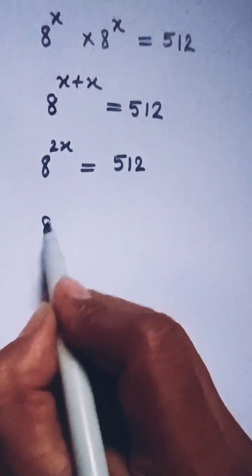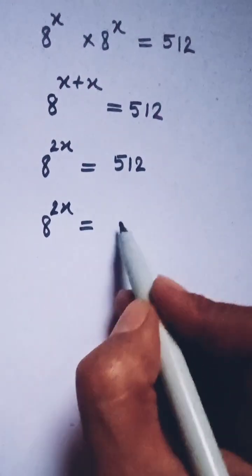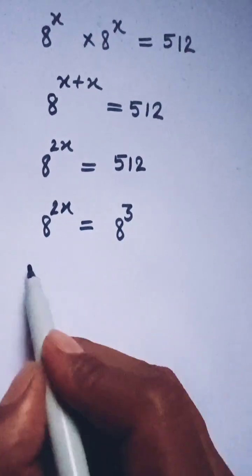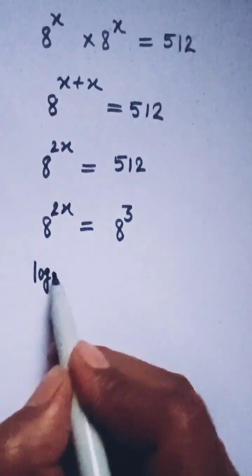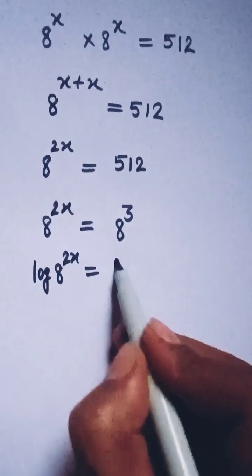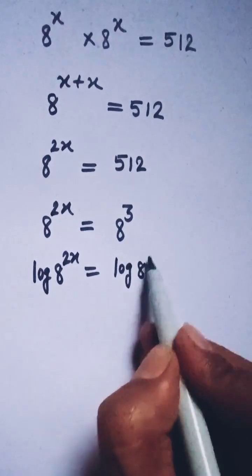Now this 8 to the power 2x and 512 can be written as 8 to the power 3. Now I am taking log on both sides, so log 8 to the power 2x equals log 8 to the power 3.